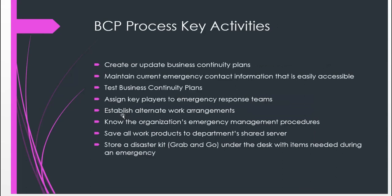The key activities to keep in mind in the business continuity planning process include: creating and updating business continuity plans, ensuring the latest information is available to everyone, testing plans, having the best personnel working on the plan, having different work arrangements that can be invoked in the event of a disaster, and having emergency management procedures in place — for example, a disaster kit if you're in a disaster-prone area. Thank you for listening to this video on business continuity planning, and I hope you have learned something helpful.